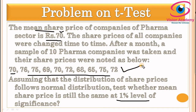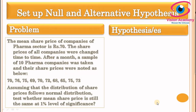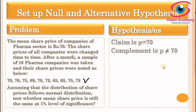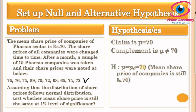Step one: set up the null and alternative hypothesis. We wish to test that the mean share price (mu) of pharma sector companies is still 70 rupees after all changes encountered over one month. Our claim is mu equals 70. Since the claim contains an equality sign, I will take the claim as the null hypothesis: H₀: mu = 70, meaning the mean share price of pharma companies is still 70 rupees.